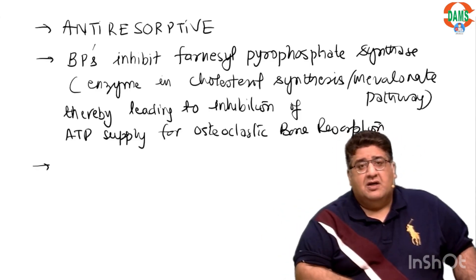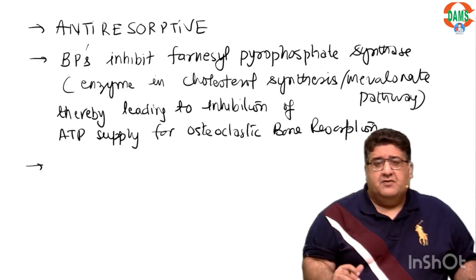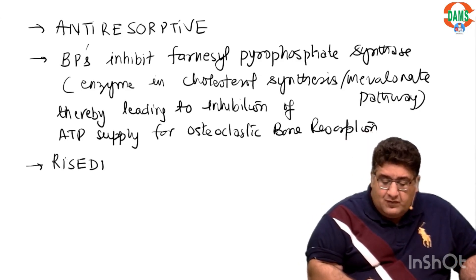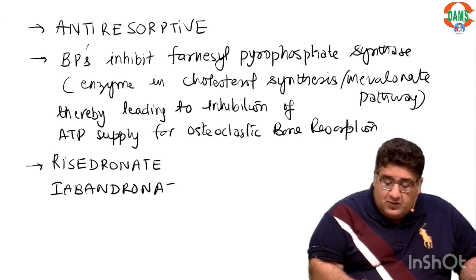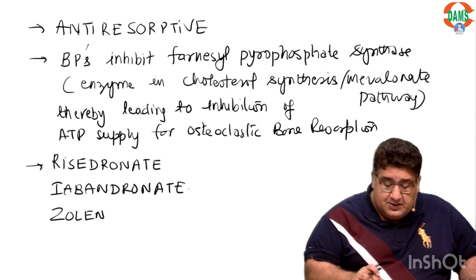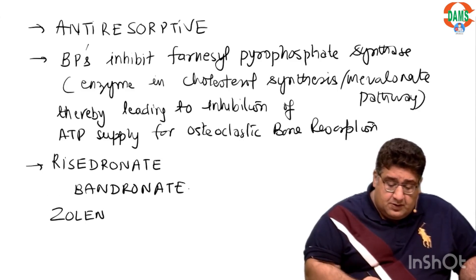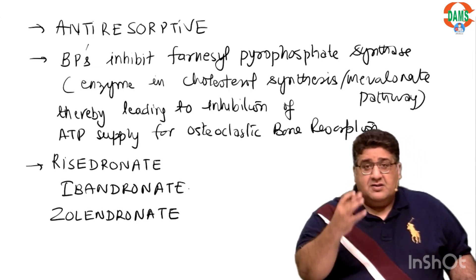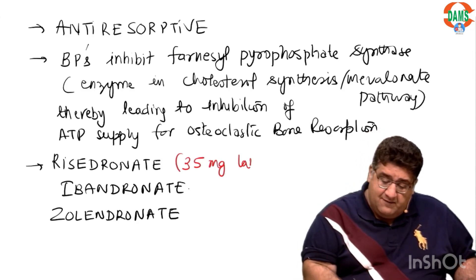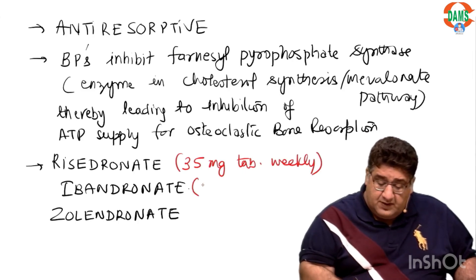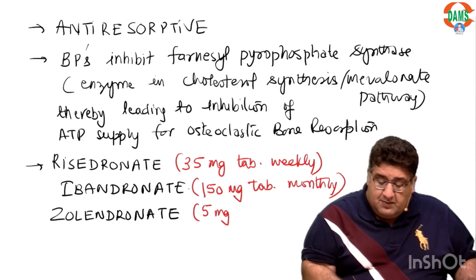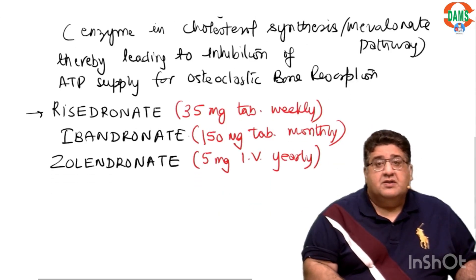There are many bisphosphonates in the clinical market. Some important ones: Risedronate — a 35 milligram tablet given once a week; Ibandronate — a 150 milligram tablet given once a month; and Zoledronate — a 5 milligram intravenous injection given once a year.